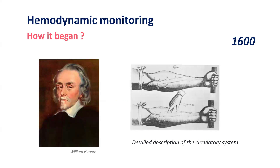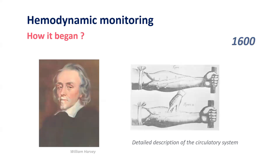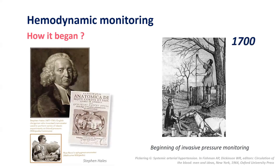It began in the 16th century when William Harvey first gave a detailed description of the circulatory system. Later in the 17th century, Stephen Hales began invasively measuring pressures in horses. This was followed by Riva Rocci, who described the sphygmomanometer, which really pushed forward the boundaries of haemodynamic monitoring.